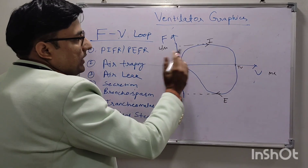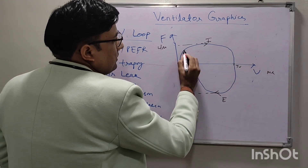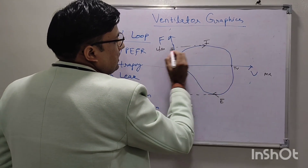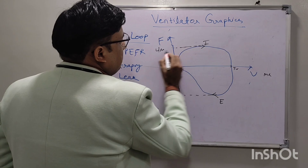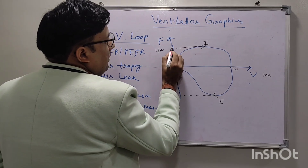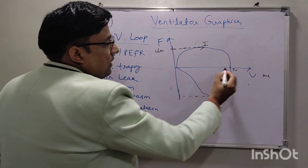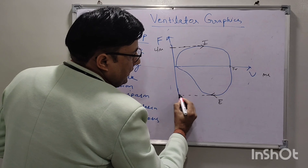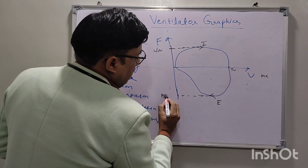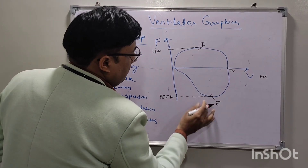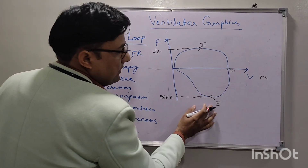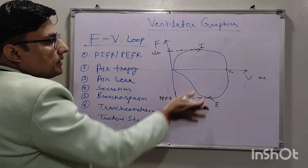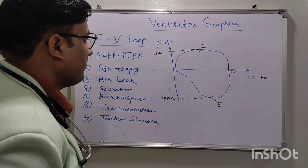First we can see the peak inspiratory flow. Flow is increasing and here it has reached the peak inspiratory flow. Then coming to expiration, here it is reaching the peak expiratory flow rate. So both peak inspiratory flow rate and peak expiratory flow rate can be seen in this graphic.